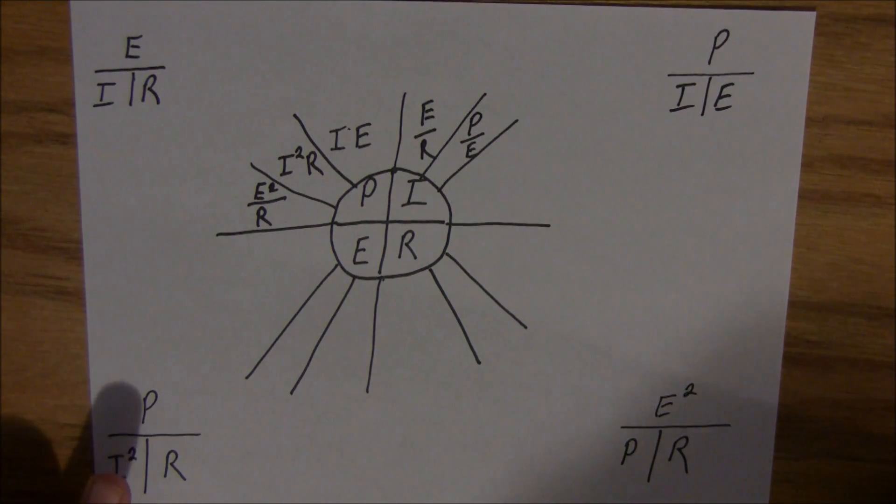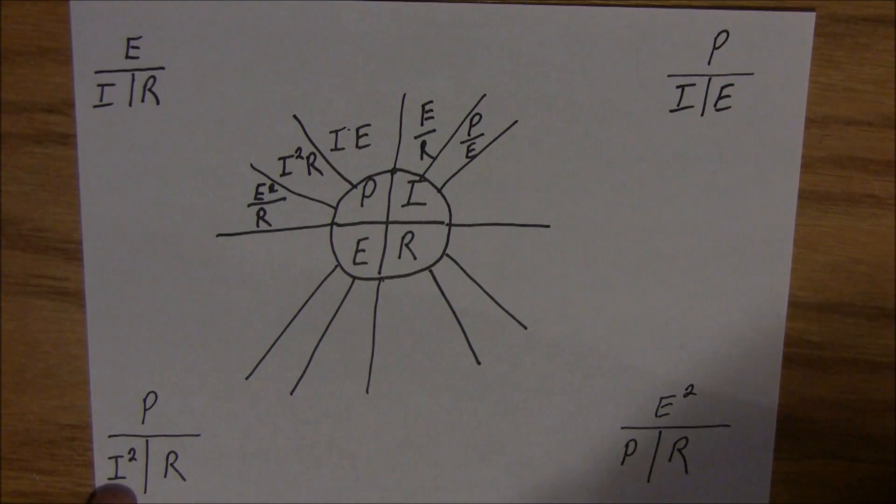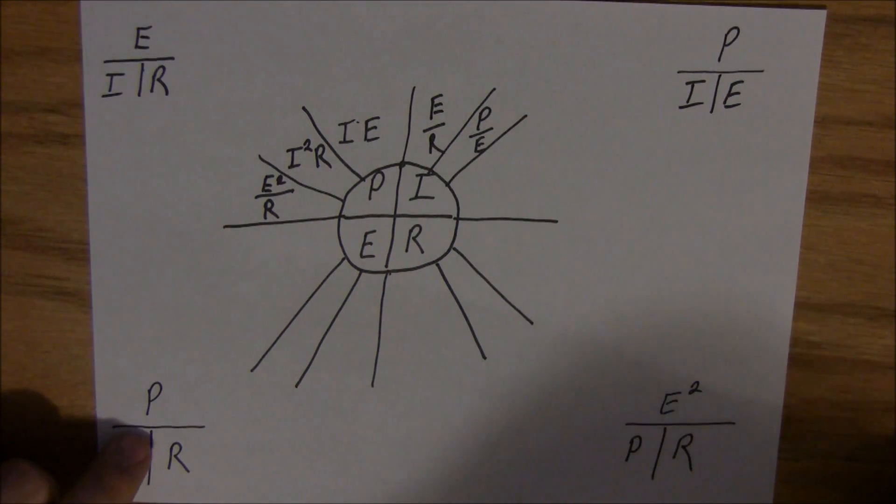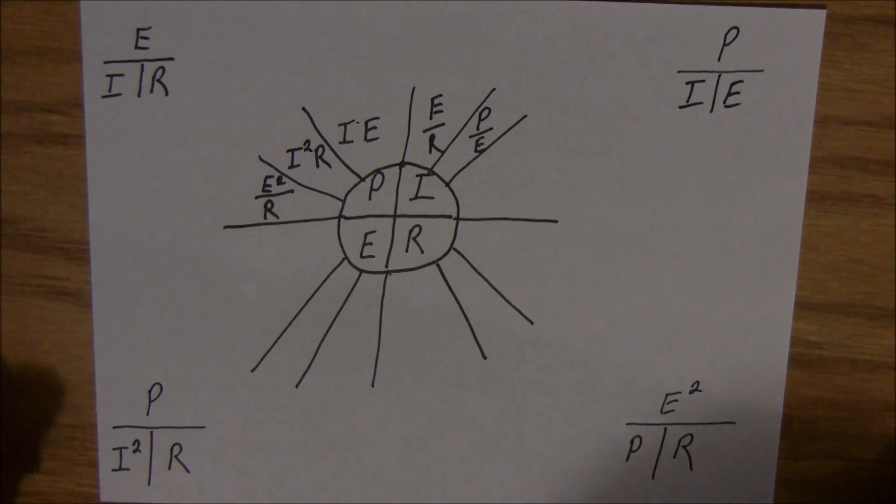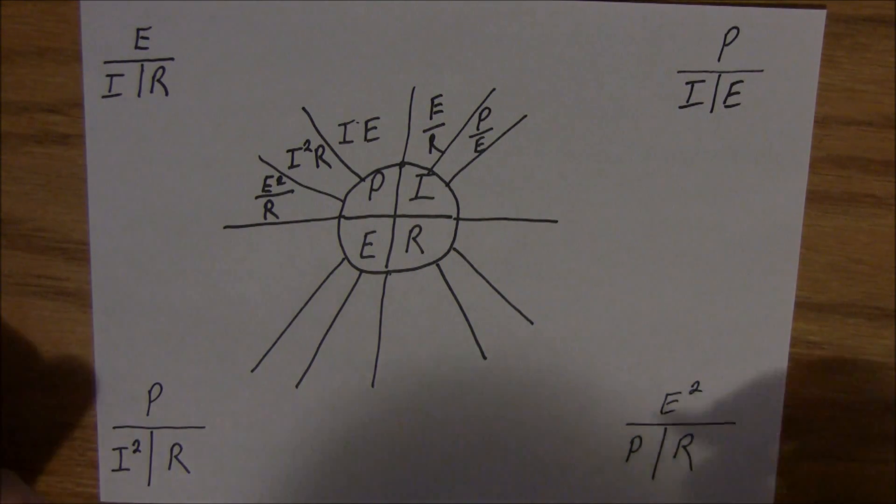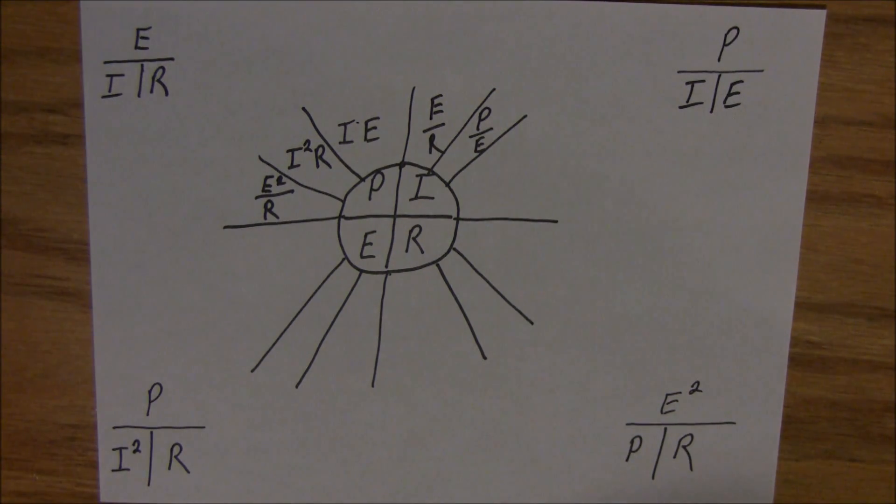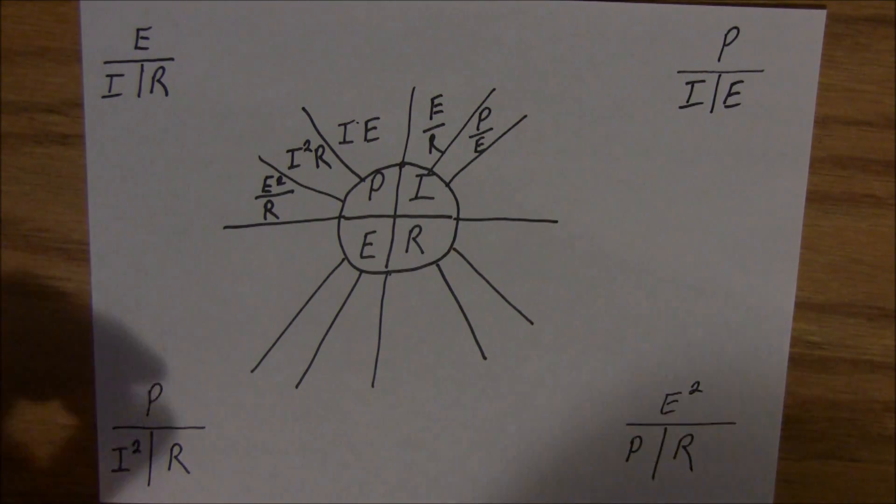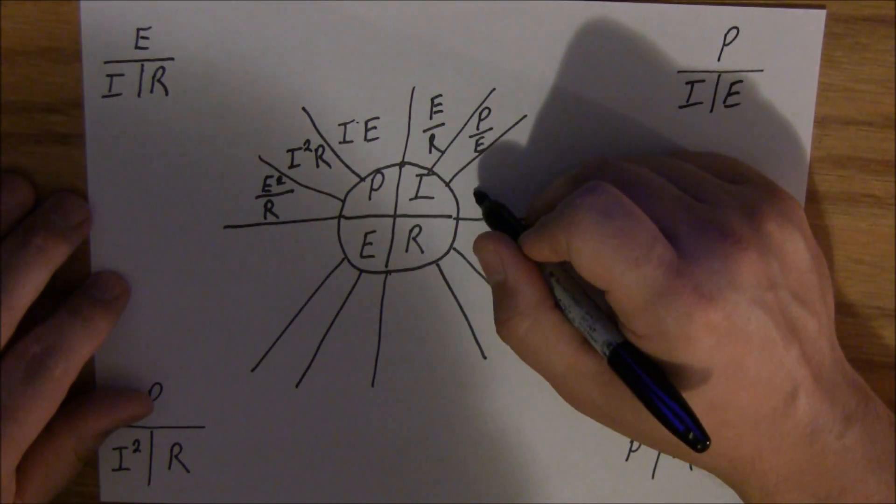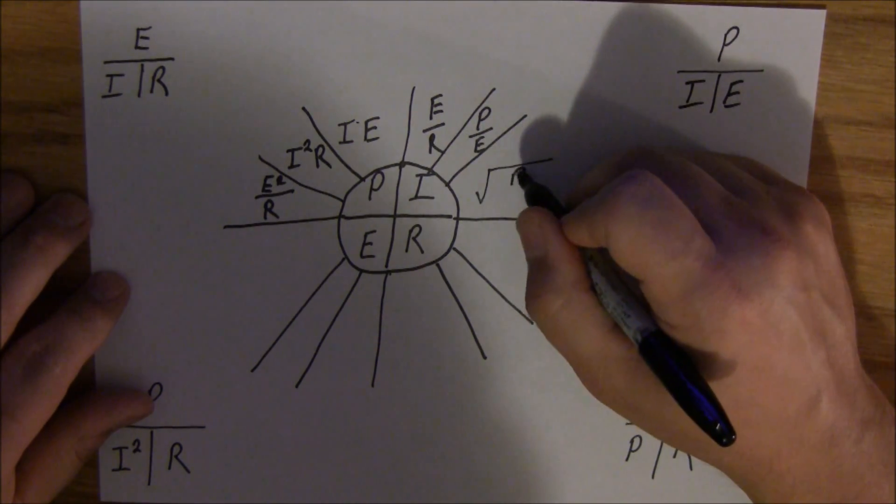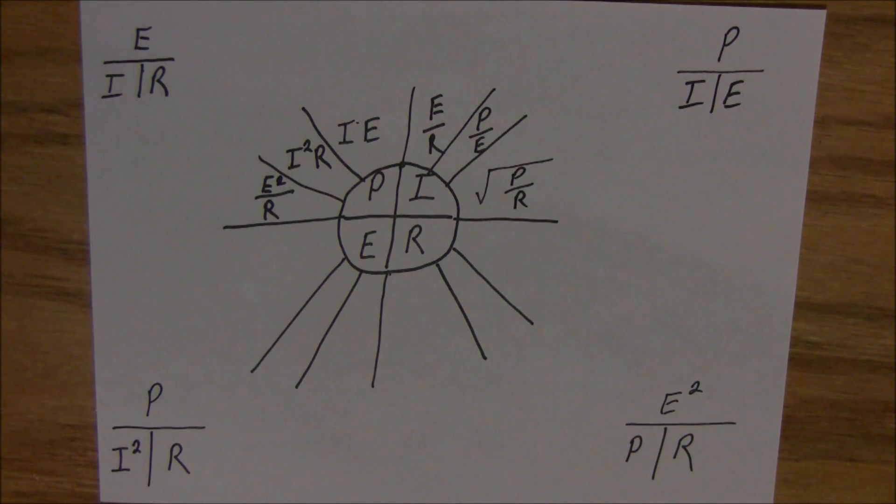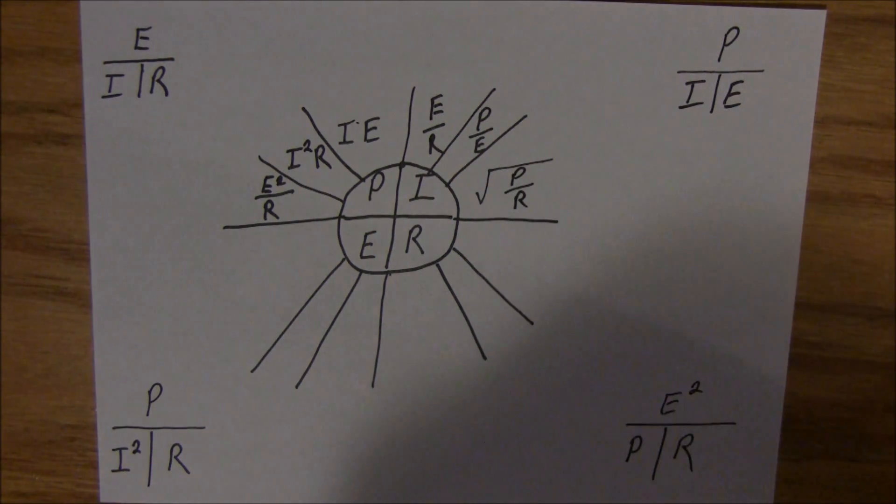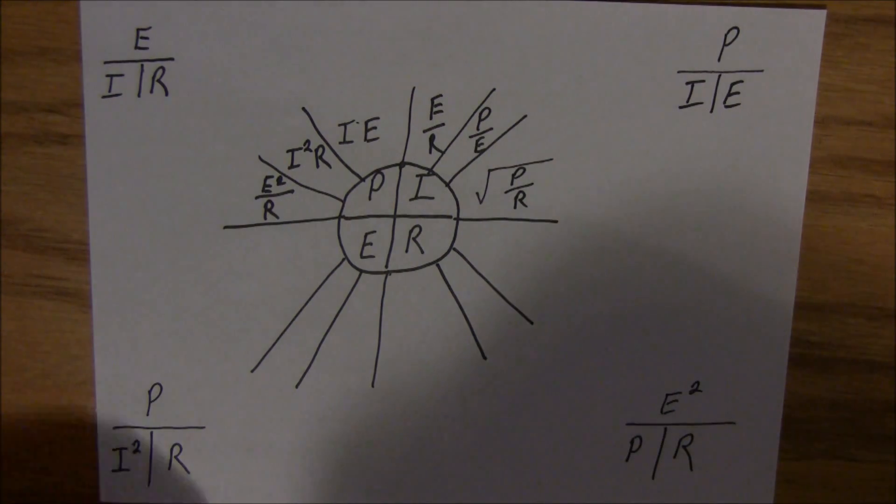And if you cover this I up, kind of important here, I squared. If you cover this I squared up, I squared is equal to P divided by R. So you know from basic algebra what you do on one side of the equal sign you have to do to the other. So if I squared is equal to P divided by R, then all you have to do is find the square root of P divided by R. And that'll tell you power or the current using watts and ohms.